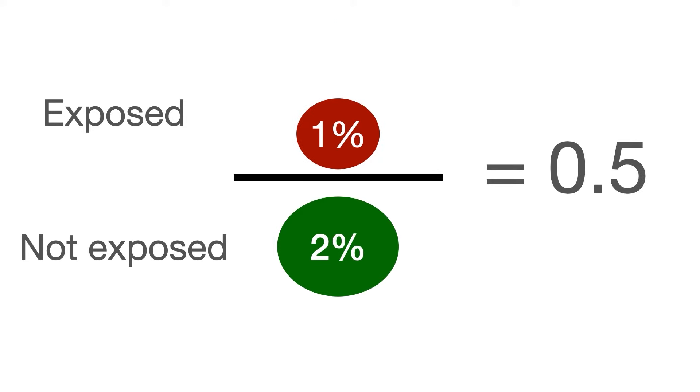And if the exposure of interest is protective against the particular outcome, like for example, the use of sunscreen to protect against skin cancer, then the risk ratio will be less than 1. In this case, it's a half. Have you got it? Of course you got it. What a question. Let's keep going.